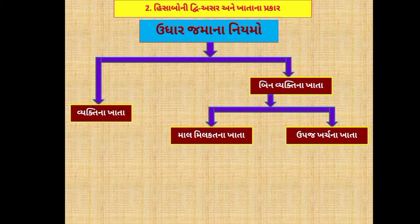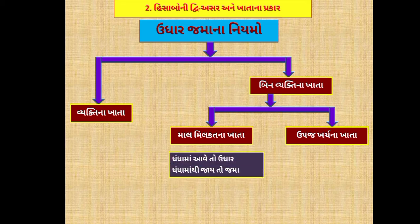આ ત્રણે પ્રકારના ખાતા માટે ઉધાર-જમાના નિયમો કેવા છે તેની સમજૂતી જોઈએ. સૌ પ્રથમ, માલ-મિલકતના ખાતા: આ પ્રકારના ખાતામાં ઉધાર-જમાનો નિયમ - ધંધામાં માલ કે મિલકત આવે તો ઉધાર. કોઈ પણ આર્થિક વ્યવહાર થતો હોય અને તેને કારણે કોઈ માલ અથવા મિલકત ધંધામાં આવે તો ઉધાર કરવામાં આવે.